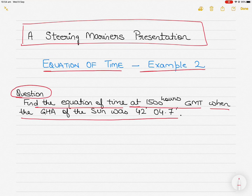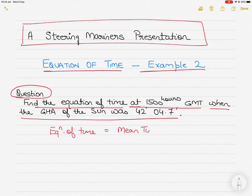Just a quick recap of what the equation of time is: it is the difference between mean time and apparent time. When I say difference, whichever is greater is written first and whichever is smaller is written later.